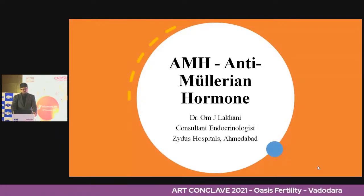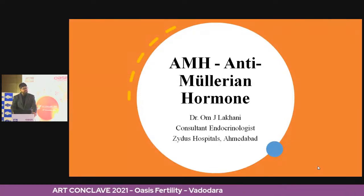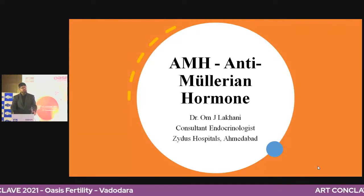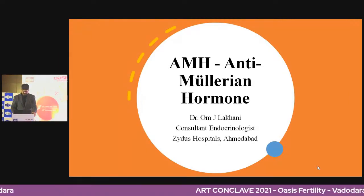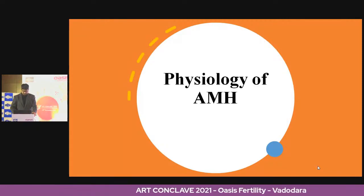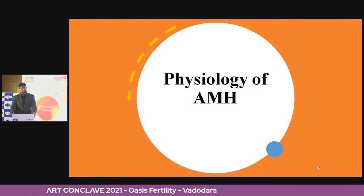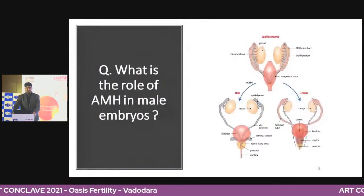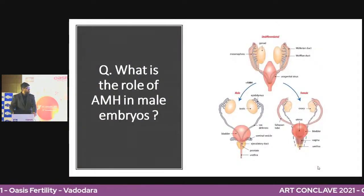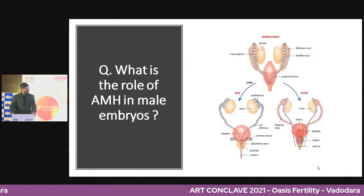Let's talk about AMH — anti-Müllerian hormone. As the name suggests, it's technically supposed to be useful in men, and that's where its genesis really comes from. By default, we are all destined to be women, but nature takes a course sideways in 50% of people, with production of AMH and testosterone.